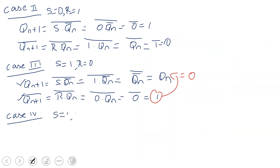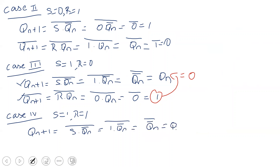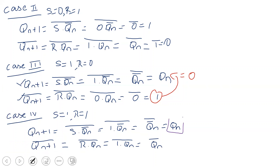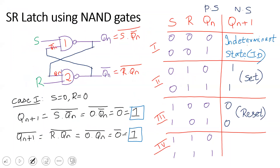Case 4: S=1, R=1. QN+1 = (1·QN_bar) bar = QN. QN+1_bar = (1·QN) bar = QN bar. QN and QN bar are complements of each other, satisfying the condition. If present state QN=0, output remains 0; if QN=1, output remains 1. There is no change in the state of the device.